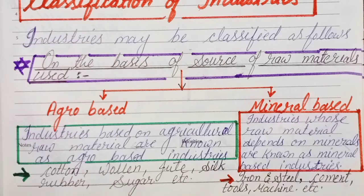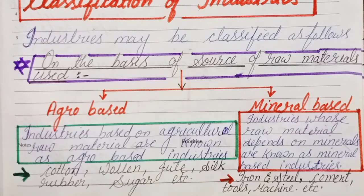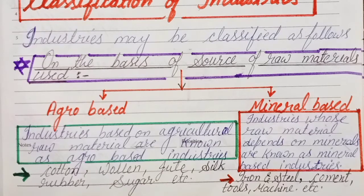We classified these on the basis of source of raw material. A common 1-mark question: how many categories do we divide industries into on the basis of raw material source? The answer is two categories — first is agro-based and second is mineral-based. If asked what is agro-based industry, say: industry based on agriculture products as raw material. If asked about mineral-based, say: industries whose raw material depends on minerals.